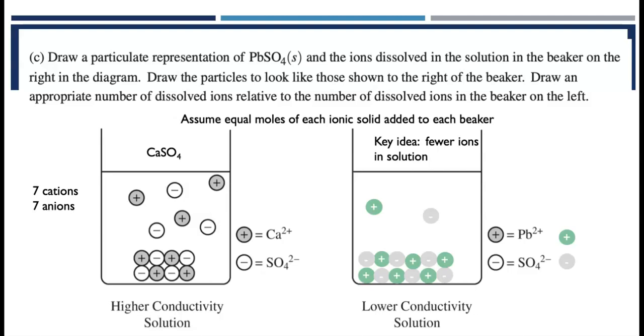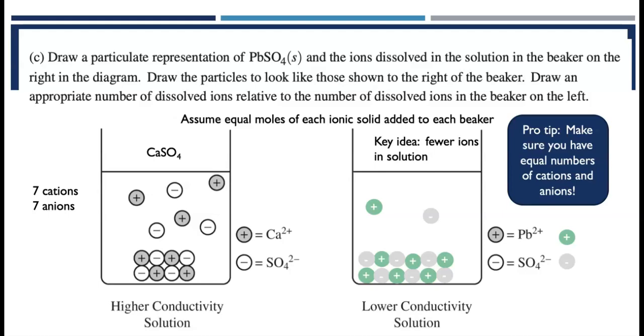I chose to represent one cation and one anion in solution and have six cations and six anions at the bottom. That was the core idea you needed to have. You do need to make sure that your compound is electrically neutral. So you do have to have equal numbers of cations and anions, as I mentioned earlier. And that was what you needed to show to earn one point.